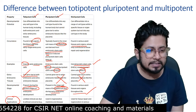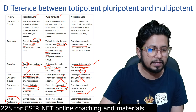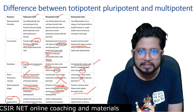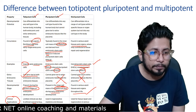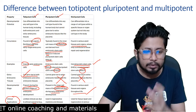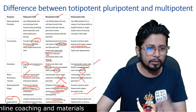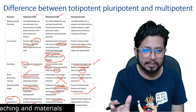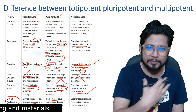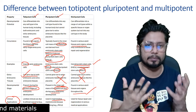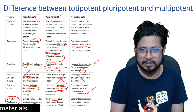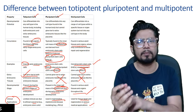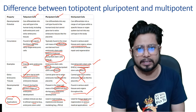Last point — clinical applications. Totipotent cells have limited clinical use due to ethical concerns around embryonic stem cells. Pluripotent stem cells, on the other hand, can be utilized in regenerative medicine and disease modeling — particularly induced pluripotent stem cells (iPSCs), since working with totipotent stem cells raises significant ethical issues. The closest alternative is iPSCs, which we can work with for regenerative medicine and disease modeling. Multipotent stem cells are used for tissue repair studies, regeneration, and various medical applications, including animal and mammalian cell culture.